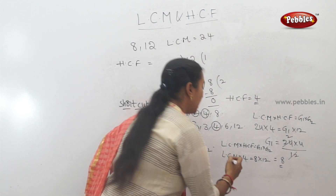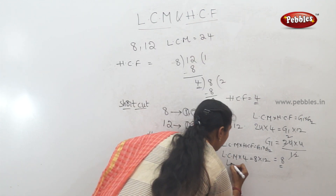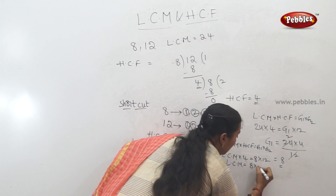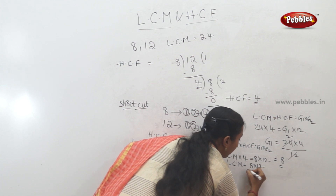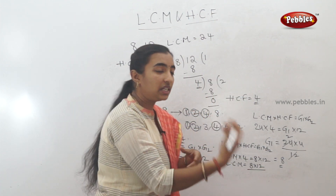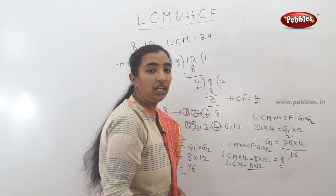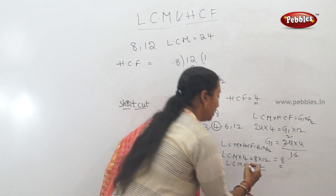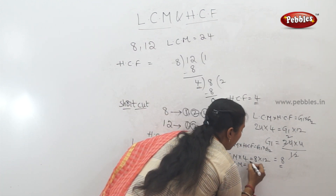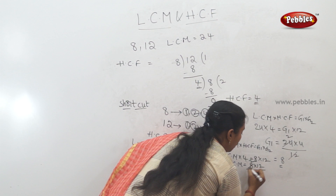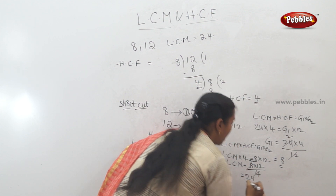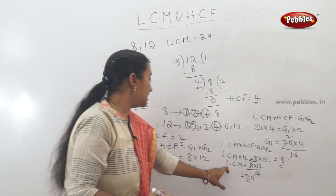LCM is equal to 8 into 12, which is 96. LCM into 4 equals 96. Divide by 4. 4 goes into 96 — 2 times 12 is 24. So 24 is the LCM.